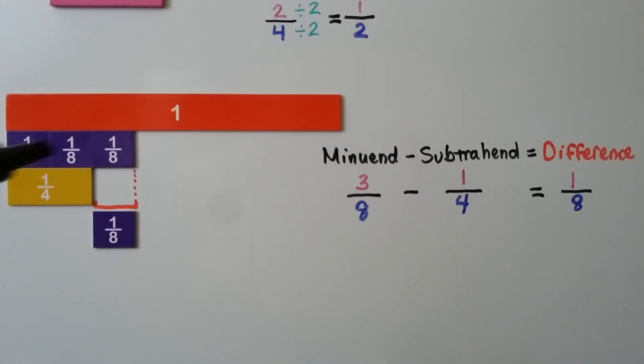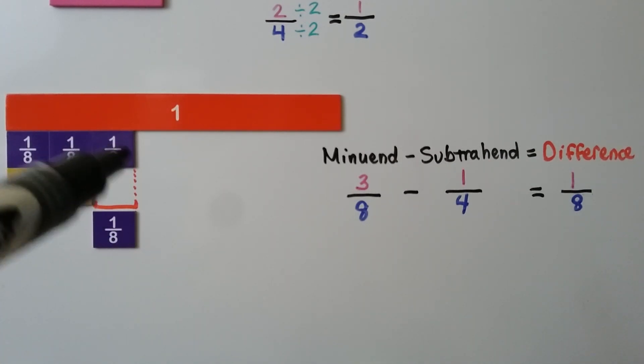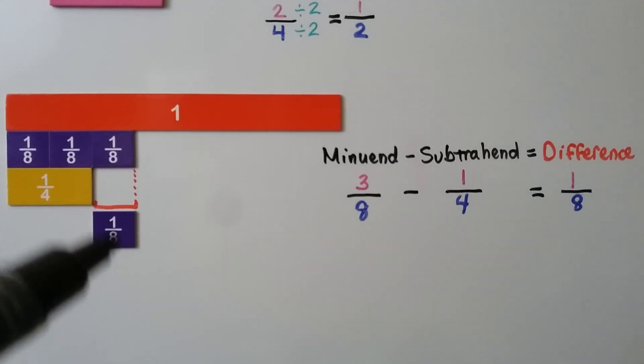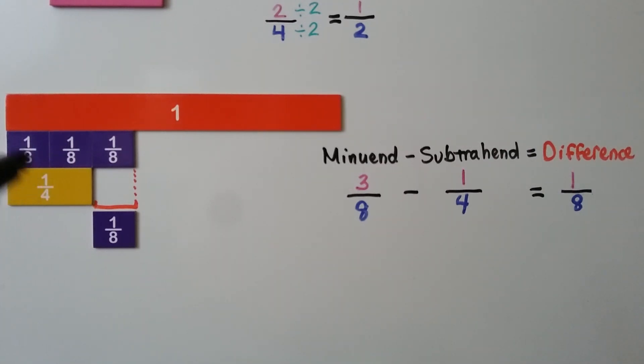Here we have three-eighths minus one-fourth. We can see a one-eighth piece lines up perfectly for the difference between the two lengths. Three-eighths minus one-fourth equals one-eighth. And we can see that two-eighths equals one-fourth.